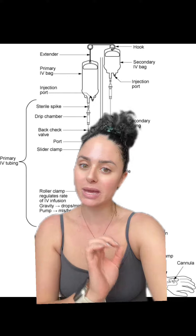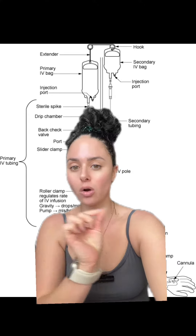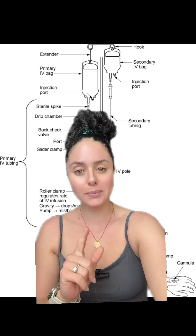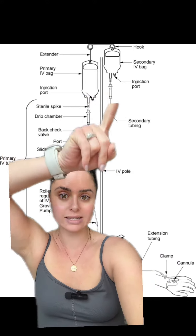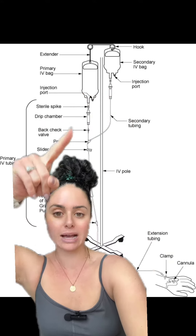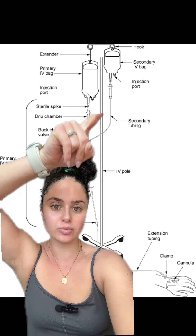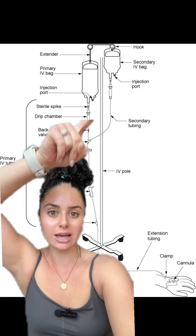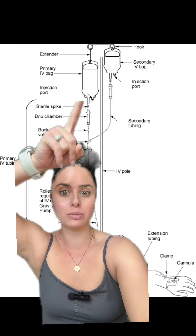Secondary infusions or IV piggybacks are smaller infusions that you're giving intermittently, like your antibiotics or electrolytes. To set up a secondary infusion, you need to hang your secondary bag higher than your primary bag. You can see how the secondary tubing is shorter and connects to your primary tubing, but the secondary bag hangs above the primary.